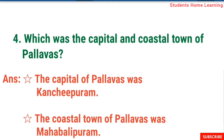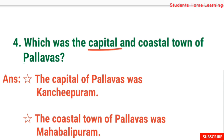Fourth one: Which was the capital and coastal town of Pallavas? Capital means the main city; coastal town means the town by the sea. Answer: The capital of Pallavas was Kanjipuram. The coastal town was Mahabalipuram.